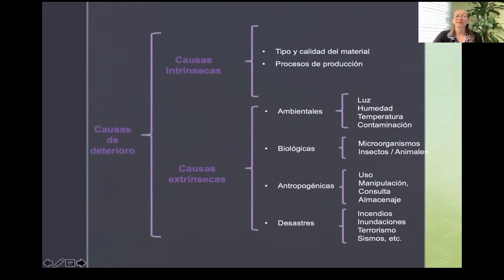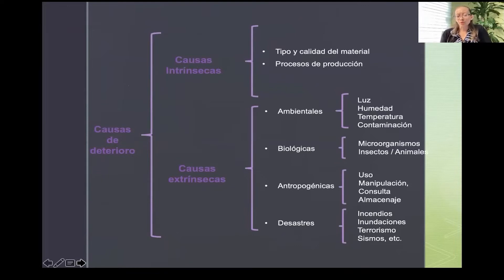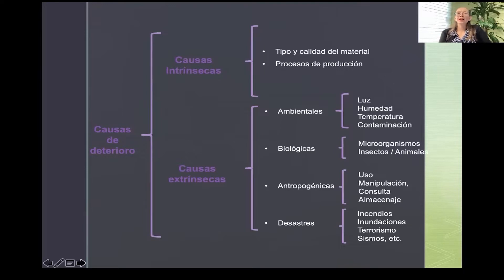Las causas principales de deterioro se dividen en dos: causas intrínsecas, que surgen de la naturaleza de los materiales y de los procesos de elaboración, es decir, la técnica de manufactura; y causas extrínsecas, que son aquellas causas medioambientales, biológicas, antropogénicas, o de desastres ya sean naturales o provocados, que pueden generar una degradación acelerada y una alteración negativa en nuestros documentos.